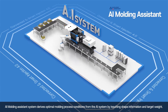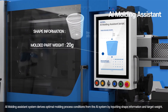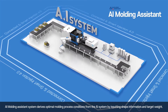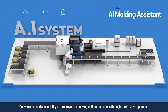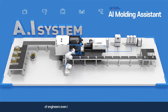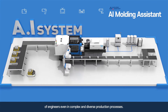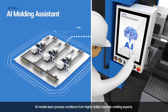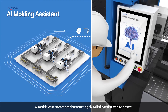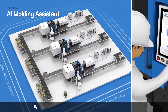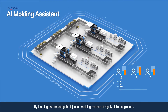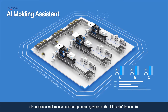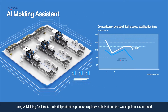The AI Molding Assistance System derives optimal molding process conditions from the AI system by inputting shape information and target weight. Convenience and accessibility are improved by deriving optimal conditions through intuitive operation, even in complex and diverse production processes. AI models learn process conditions from highly skilled injection molding experts, enabling a consistent process regardless of the skill level of the operator.